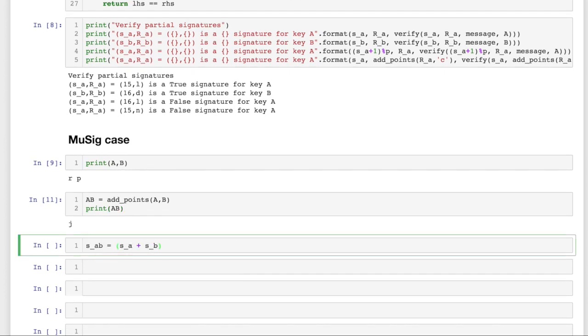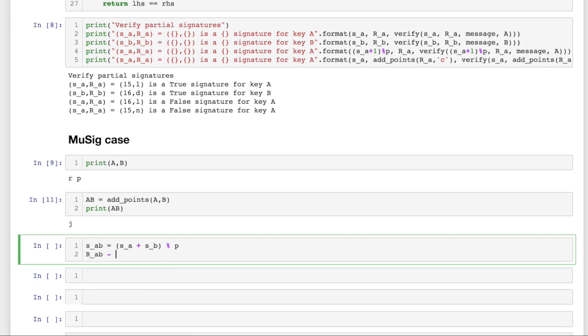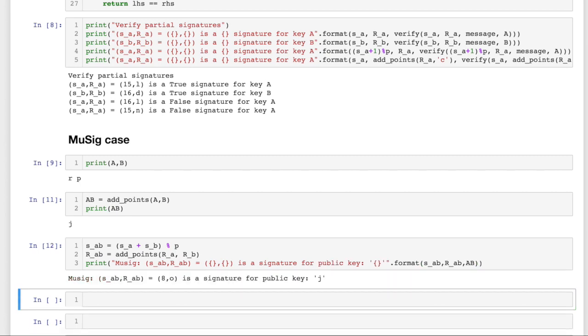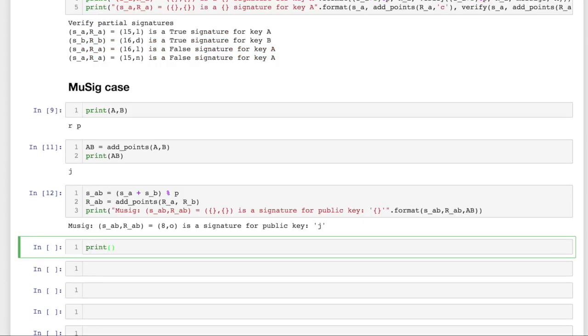So for the s values I have to do the modulo operation and for the points I have to use the add points method because points are not added like regular numbers since they are points. Now I'm just gonna print out the values and I see that this is a signature for the public key.